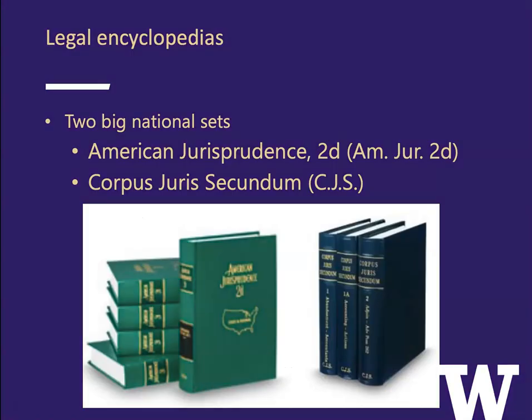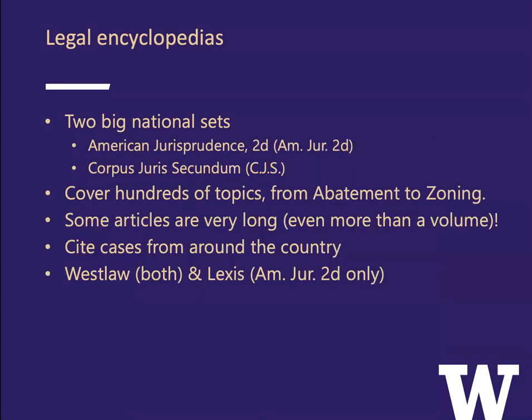Legal encyclopedias: there are two big national sets — American Jurisprudence Second, called AmJur or AmJur Second, and Corpus Juris Secundum, called CJS. They both cover hundreds of topics from abatement to zoning. Some articles are very long, even more than a volume, and they cite cases from around the country.